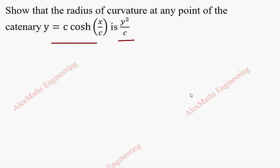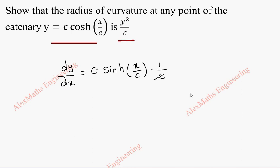As a first part, we are going to find dy by dx. It is a hyperbolic function, where c is a constant. The differentiation of cosh(x/c) is sinh(x/c), and the differentiation of x/c is 1/c. We can cancel these two, so we get dy by dx as sinh(x/c).